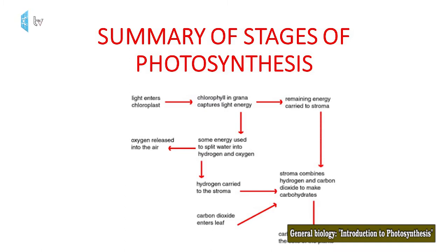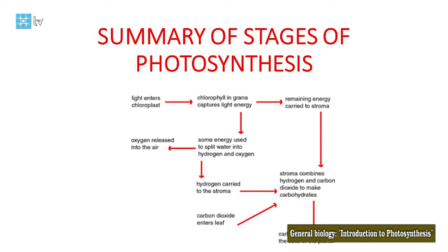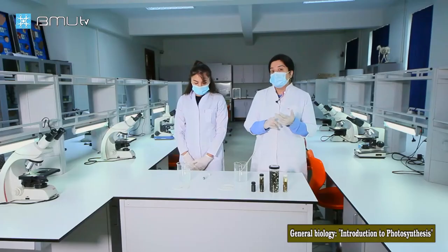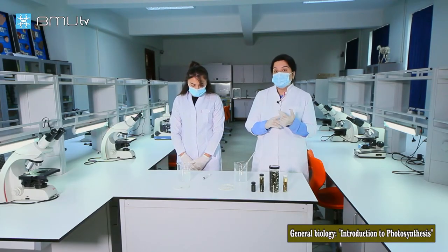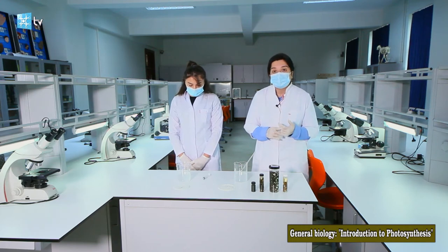Triose phosphate molecules have three carbon atoms, and two triose phosphate molecules combine to form one six-carbon glucose molecule. Plants use these glucose molecules for a number of processes — they can produce starch or be used for the formation of cellulose.